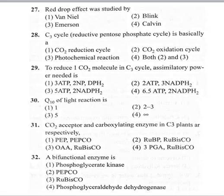Coming to the 28th question: C3 cycle, reductive pentose phosphate cycle, is basically option 1 a carbon dioxide reduction cycle, option 2 a carbon dioxide oxidation cycle, option 3 a photochemical reaction, option 4 both two and three. The C3 cycle is also called the Calvin cycle and is basically a carbon dioxide reduction cycle, where carbon dioxide is reduced to carbohydrate.